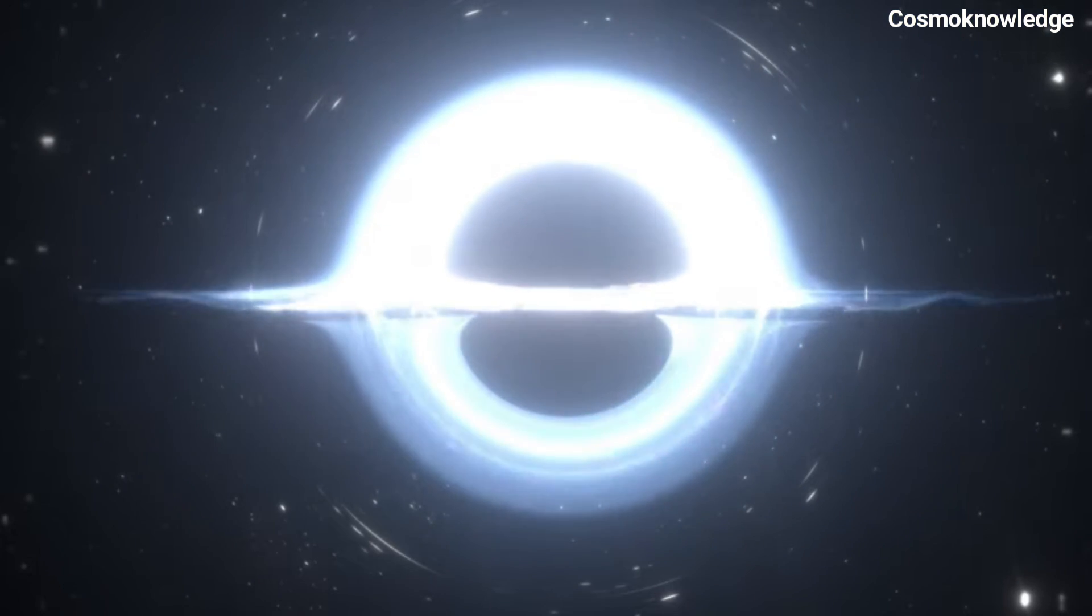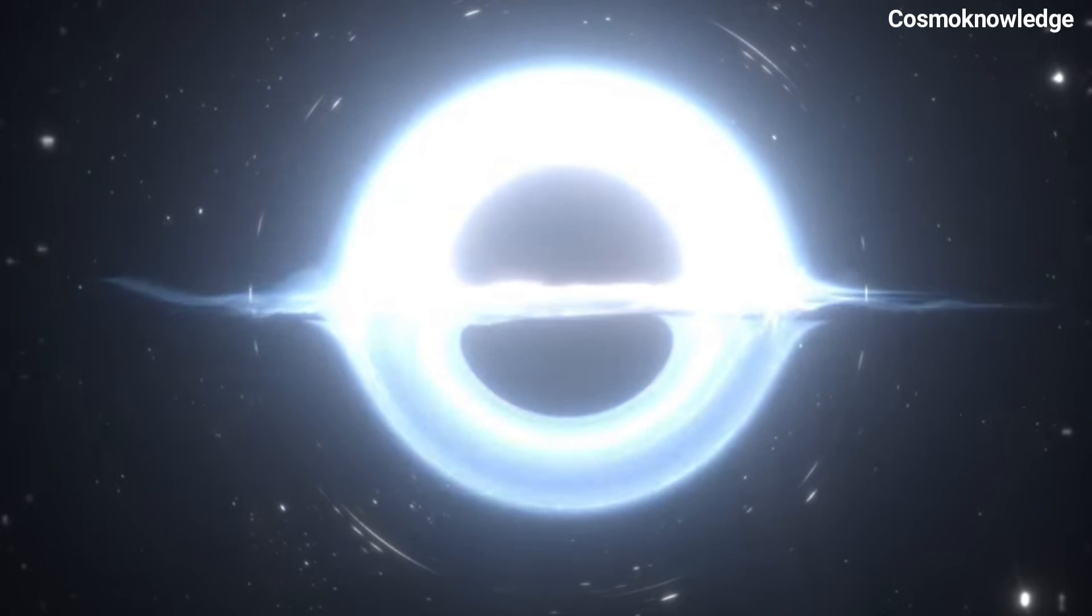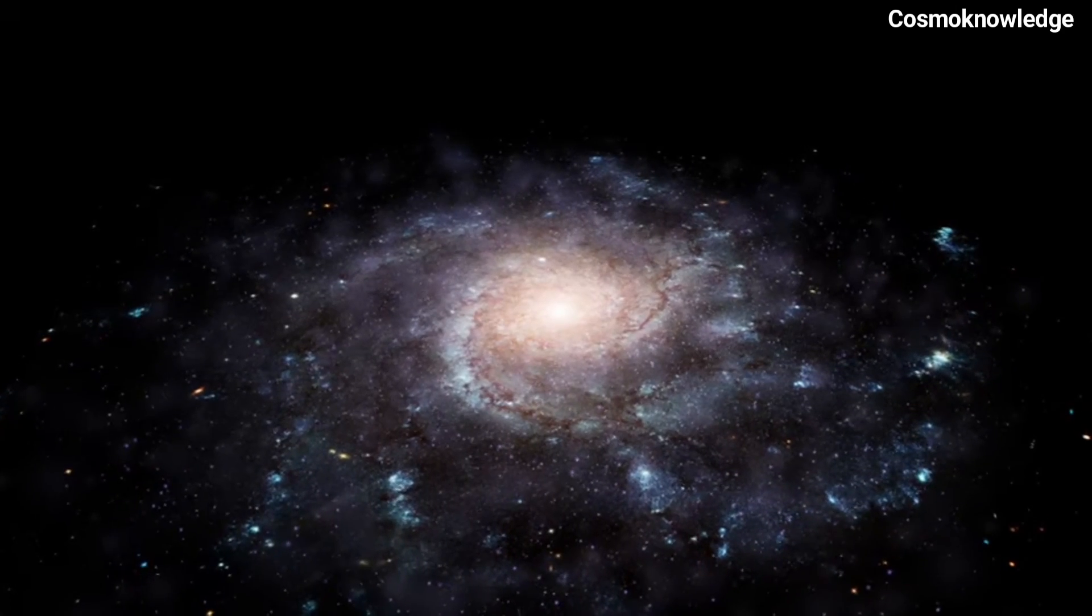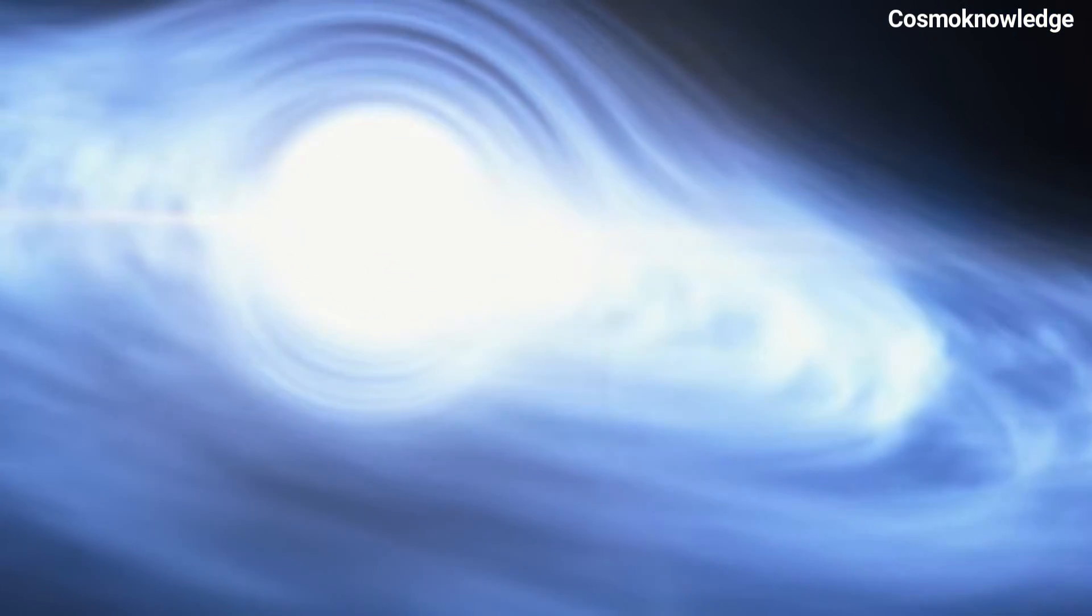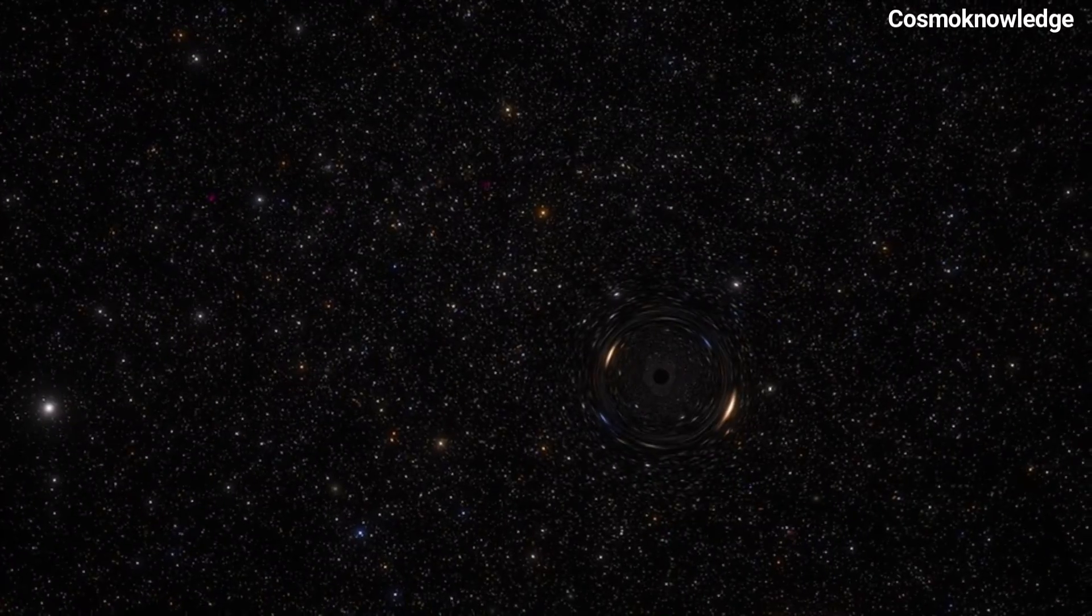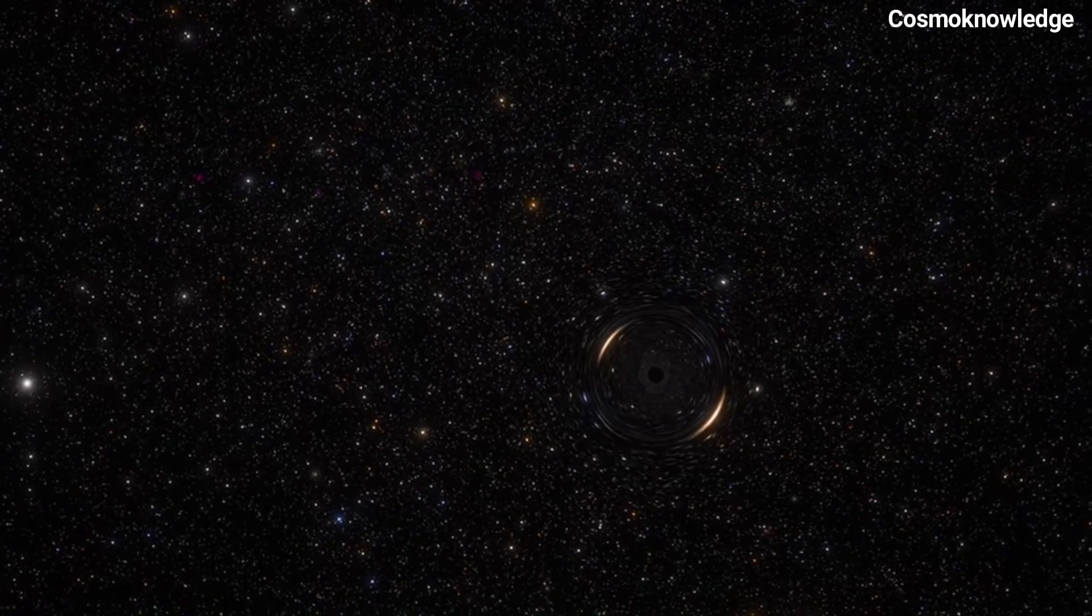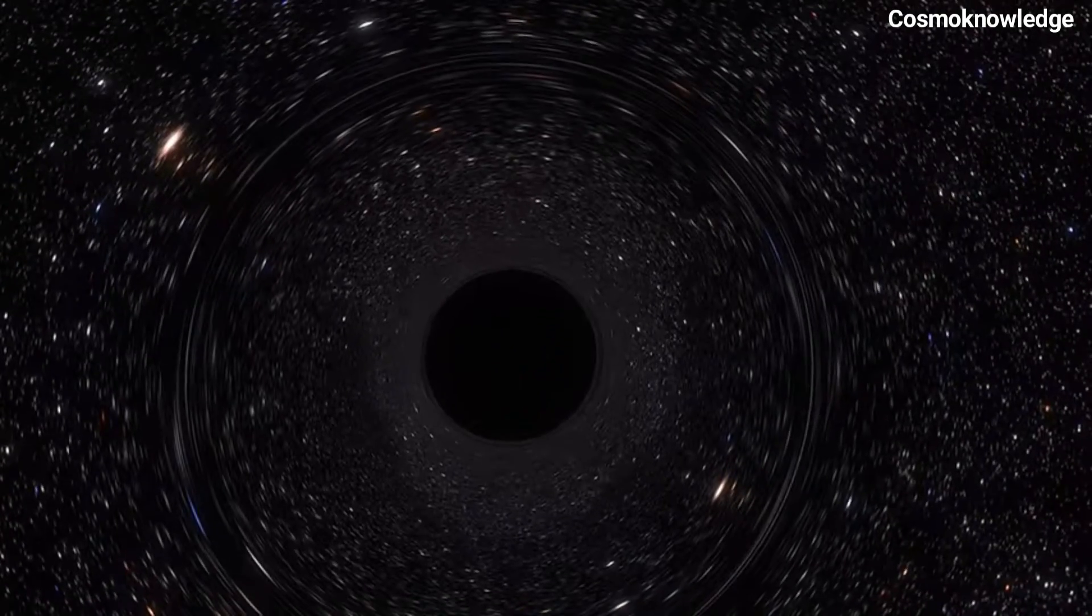If it is correct, it may also resolve another major issue, the singularity problem. A singularity is a physically undefined point in space at the center of a black hole. This suggests that there is a flaw in general relativity theory, which is most likely correct.